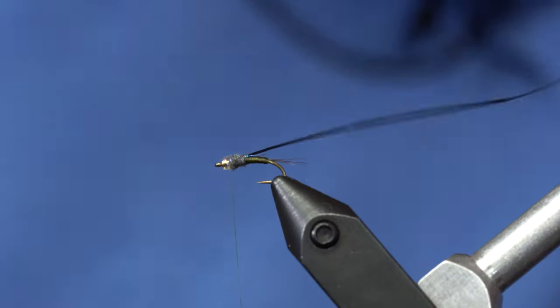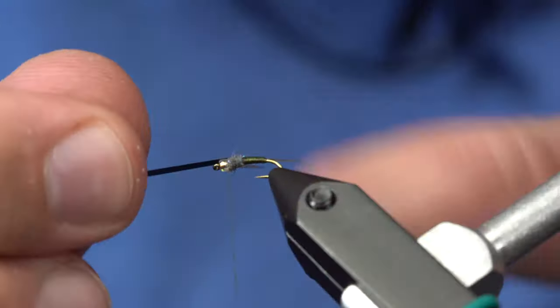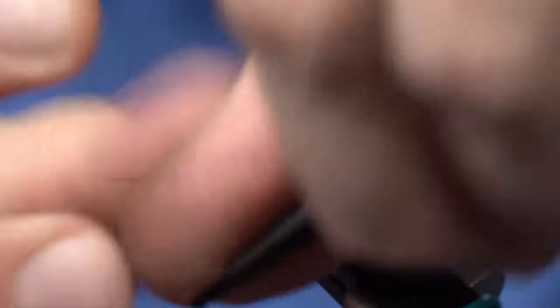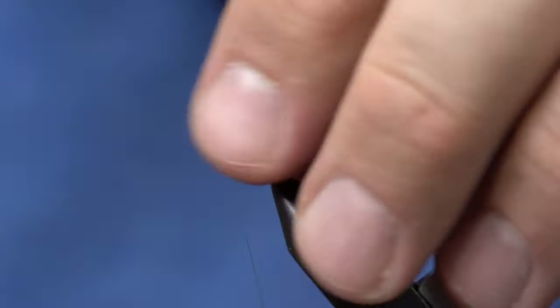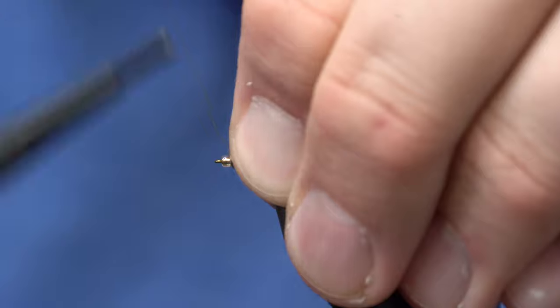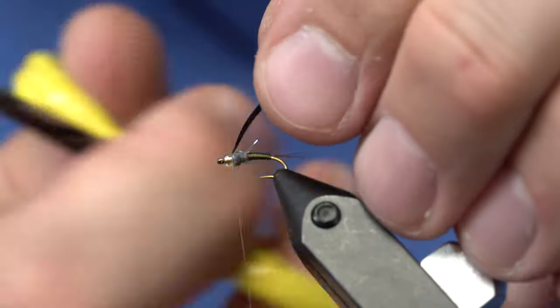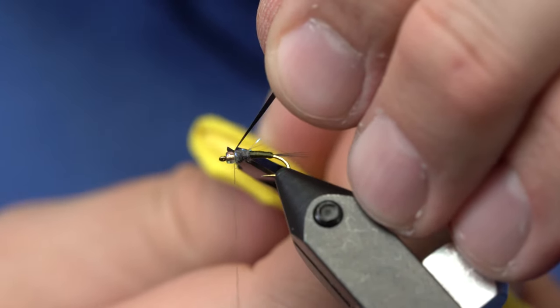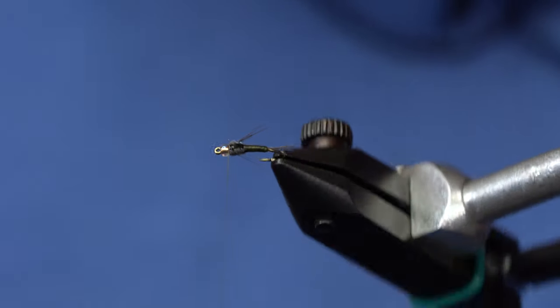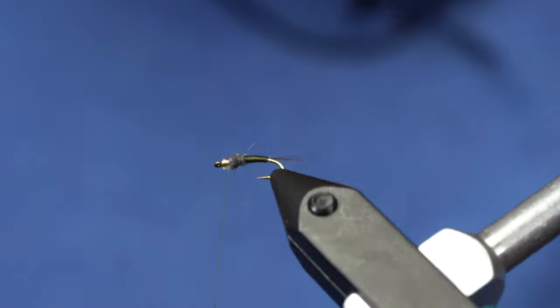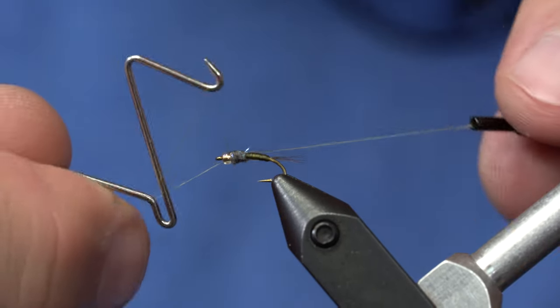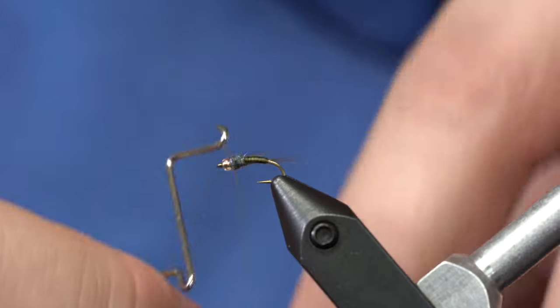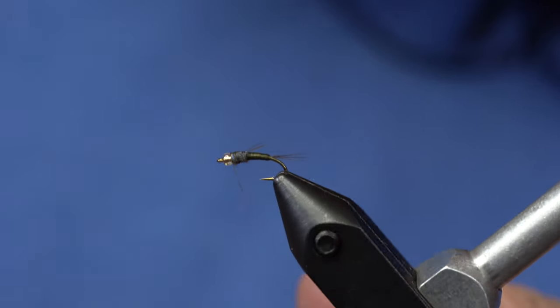All the way up to the bead and I'll just pull the wing case over and just do one turn and then put a few turns right behind the bead and trim off your wing case. So there you've got it, a little Betis with just a few little legs coming off the side. And we'll throw a whip finish in it and call it good.